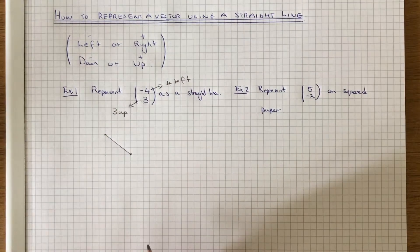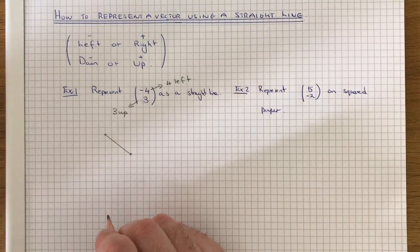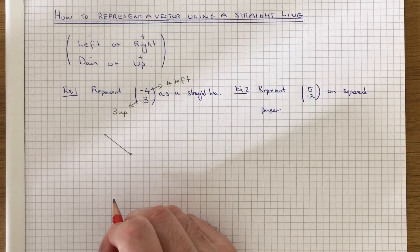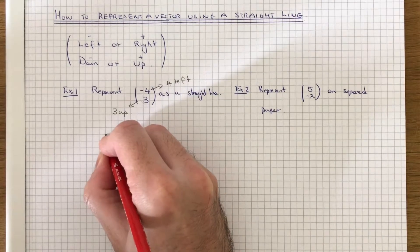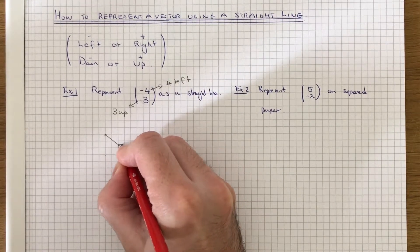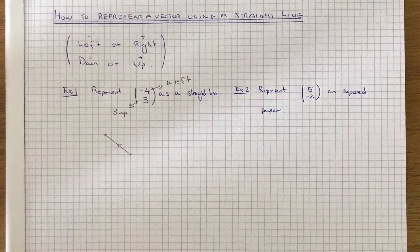If we just connect these two points up with a straight line, the final thing we need to do is put an arrow on the line to say which way we've moved the point. We started here and we finished here, so the arrow will be going upwards like that.